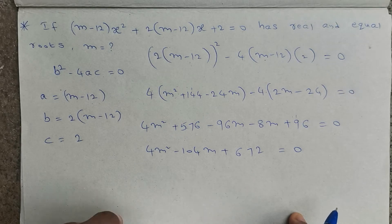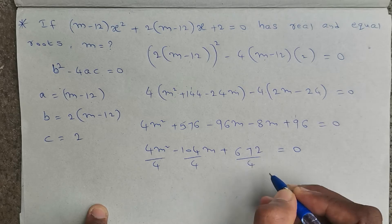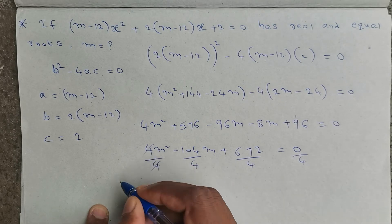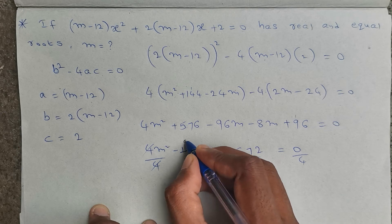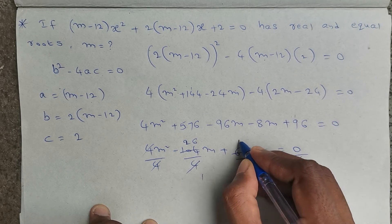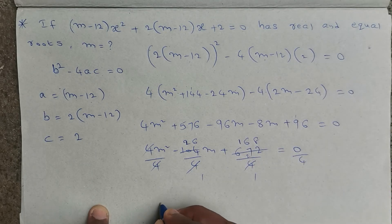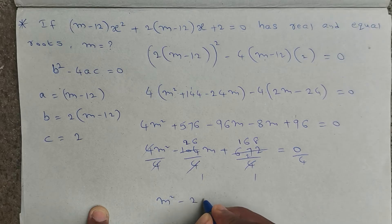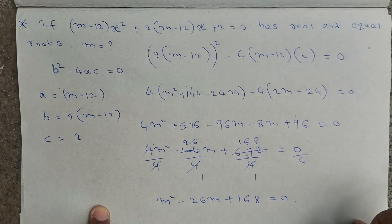Since 672 comes in the 4 times table, every term is divisible by 4. Dividing through by 4, the 4s cancel and we get m² minus 26m plus 168 equals 0. So we now have a simplified quadratic equation.